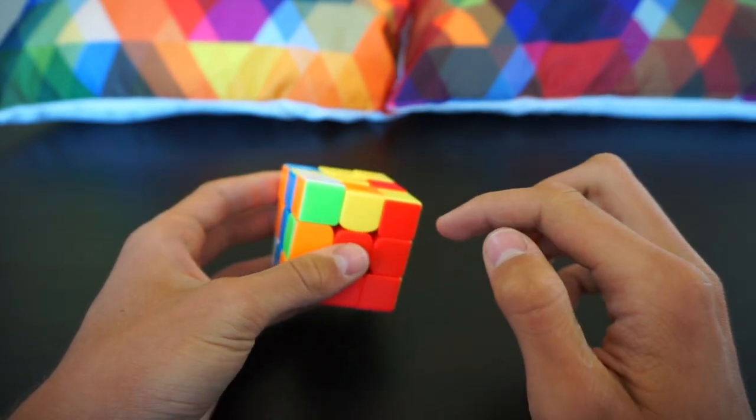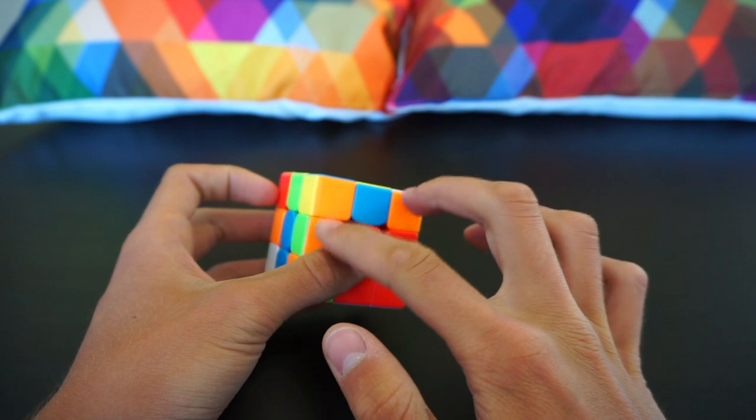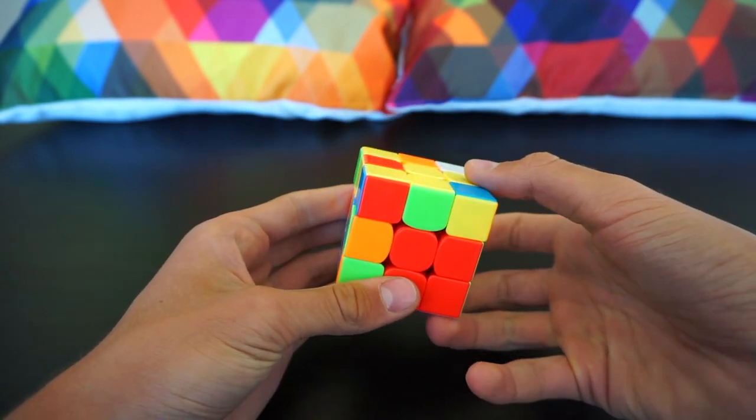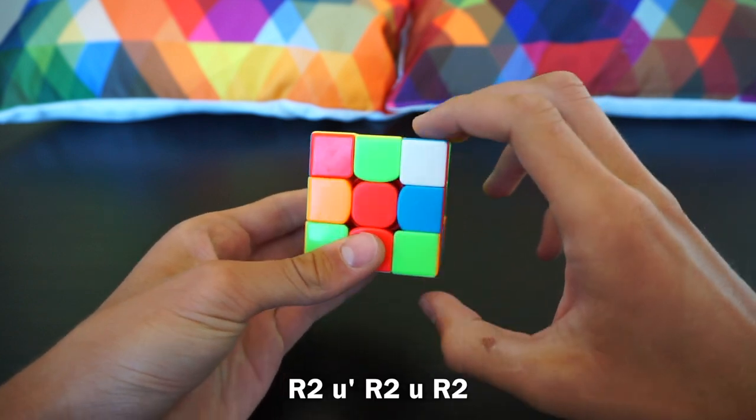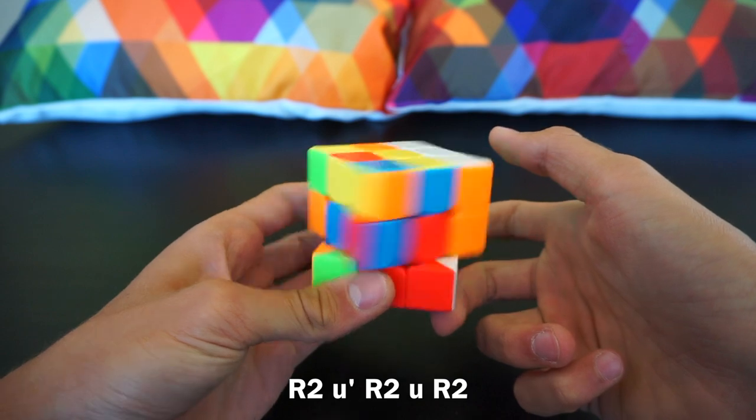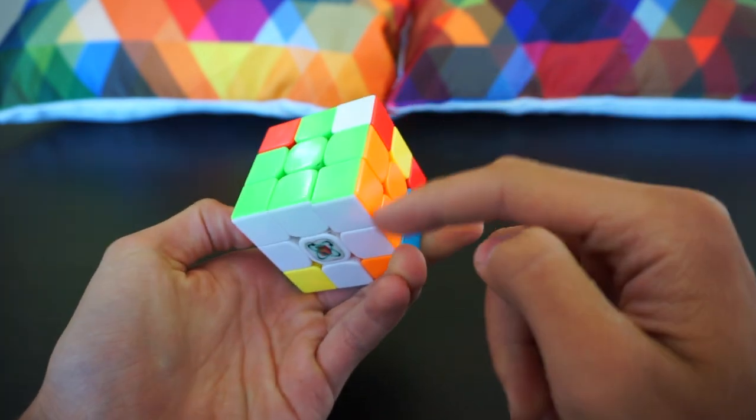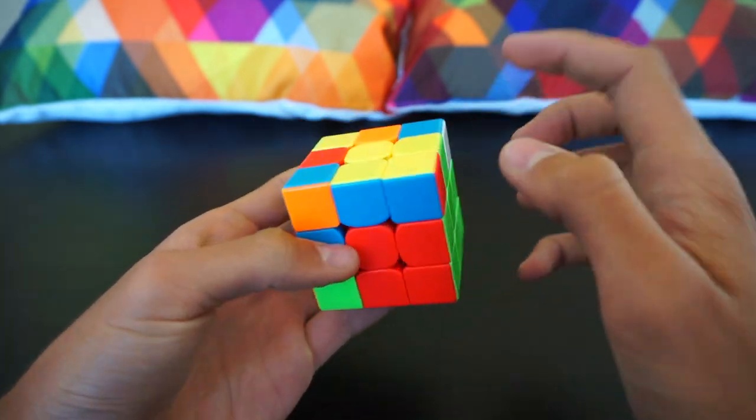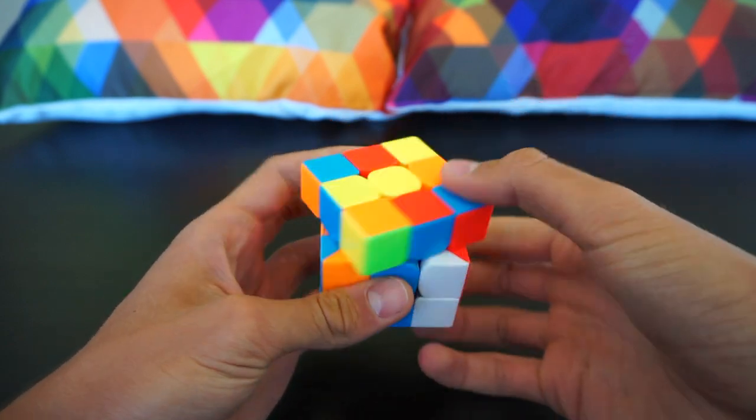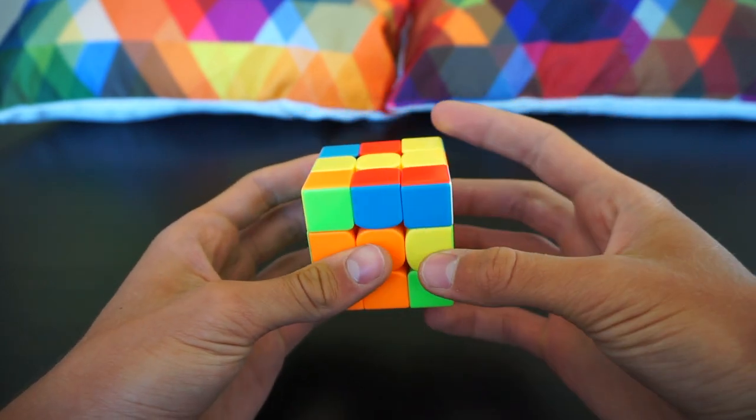Now here we have this case and I didn't do a U, so I immediately knew this case. I already put the corner there and did this algorithm: R prime, R prime wide, U prime, R2, U, R prime, and that solved that case.